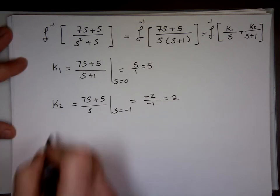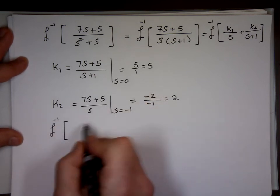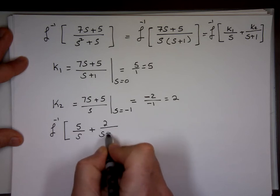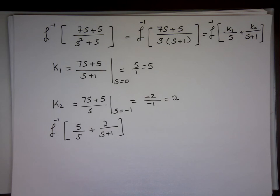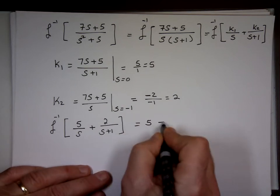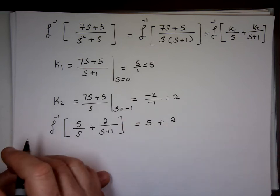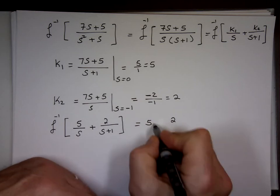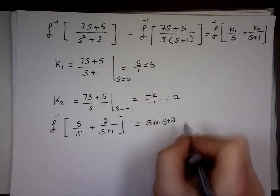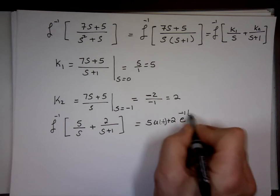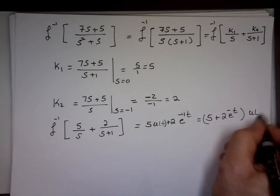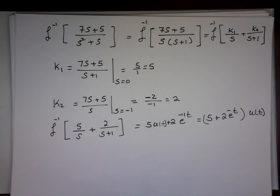So what's the inverse Laplace now? Of K1, which is 5 over S plus 2 over S+1. Who has the Laplace of 5 over S? Just 5. It's actually 5u(t), right? So if you want to be technically correct, 5u(t). The Laplace of u(t) is 1 over S. Plus 2e to the minus what? Negative 1t. So when you clean it, sometimes we go 5 + 2e^(-t). And we just put u(t) at the end. A lot quicker.